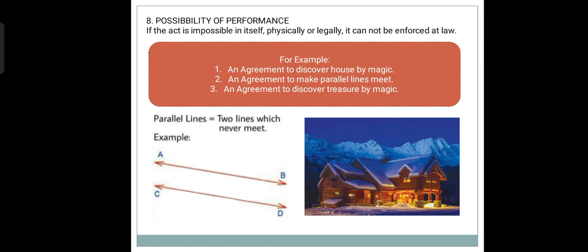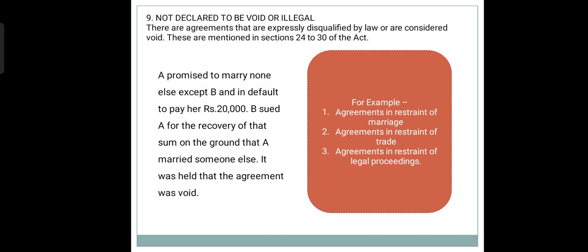Possibility of Performance. The act must be possible to perform. If it is not possible to perform, either physically or legally, then it cannot be enforced at law. For example, any agreement to discover a house by magic, any agreement to make parallel lines meet, any agreement to discover treasure by magic — these are all agreements the performance of which is not at all possible and therefore cannot be enforced at court.